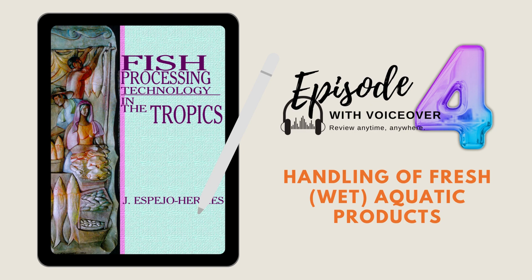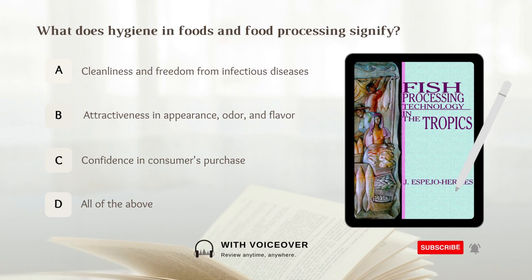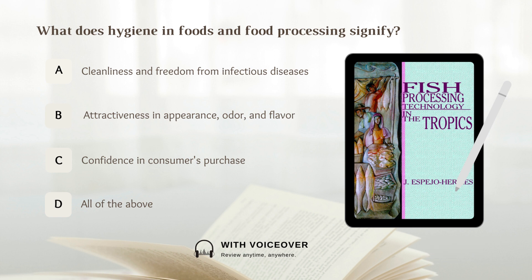Episode 4. What does hygiene in foods and food processing signify? A. Cleanliness and freedom from infectious diseases. B. Attractiveness in appearance, odor, and flavor. C. Confidence in consumers' purchase. D. All of the above. Answer: D. All of the above.